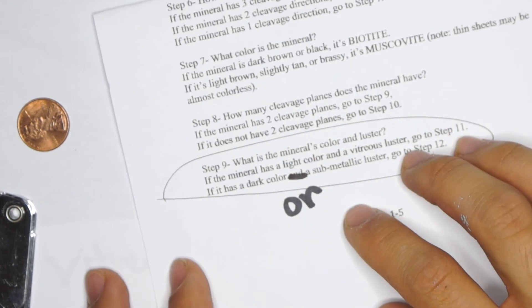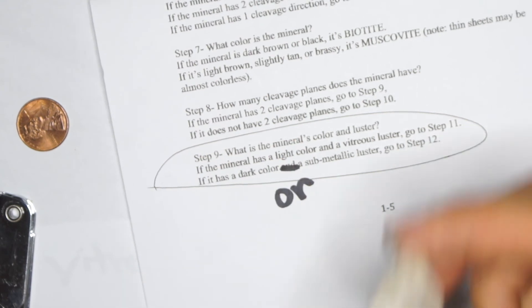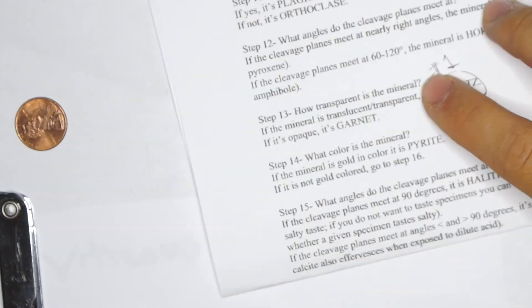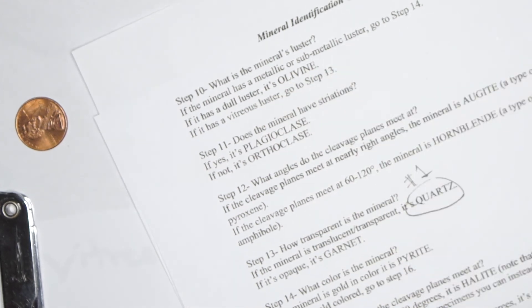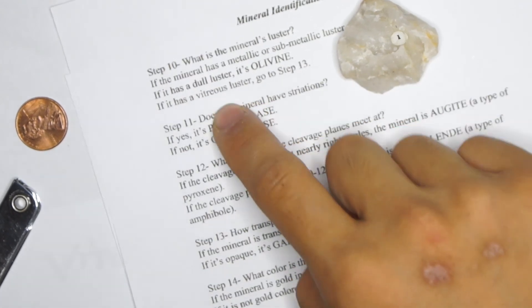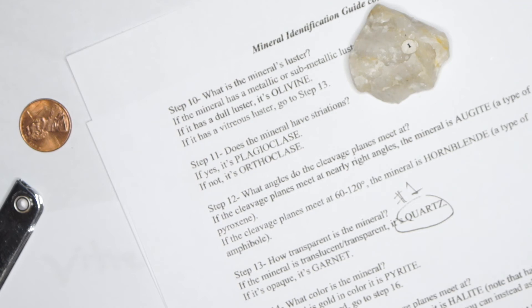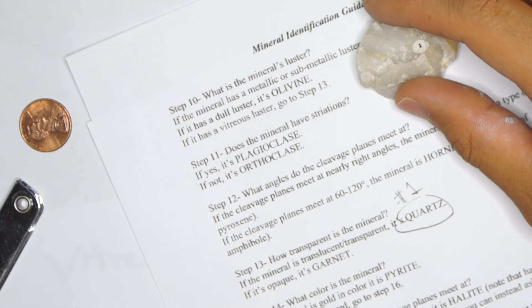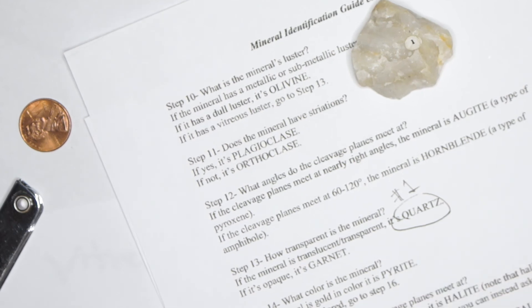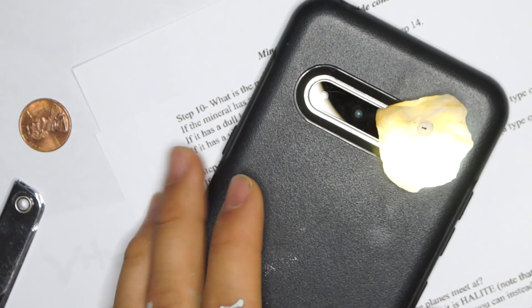How many cleavage planes does the mineral have? This is another tricky one. Does it have two or does it not have two? Well, mineral number one does not have any cleavage planes. So we're going with that, step 10. Going on to step 10, what is the mineral's luster? I think you kind of get the idea how this is going to work. When in doubt, it is vitreous in luster, kind of like glass. So we're moving on to step 13. How transparent is the mineral? The mineral is translucent or transparent, it's quartz. If it's opaque, it's garnet. You might think that this is opaque, but really this is another translucent mineral. So we know this one, number one is quartz following those steps.